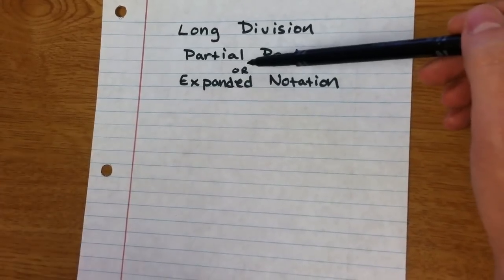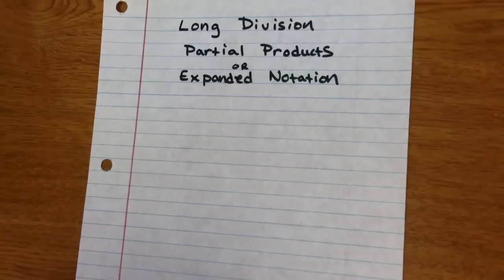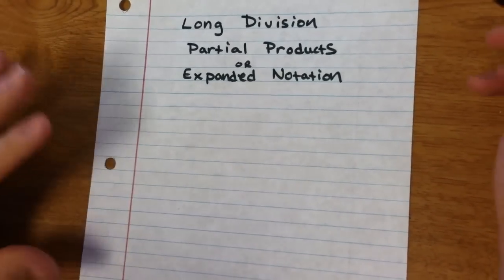This method is called partial product. Sometimes you'll hear it referred to as expanded notation. And it has a lot of differences from the traditional algorithm.